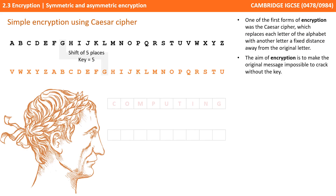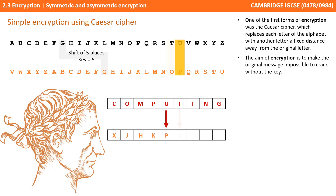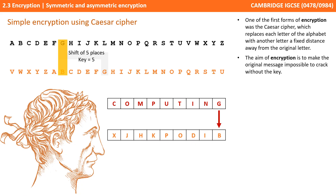One of the first forms of encryption was the Caesar cipher, which replaces each letter of the alphabet with another letter a fixed distance away from the original. To decrypt the message, the recipient needs to know how many places the alphabet has been shifted. This is known as the key. If the recipient knows the key, they can decrypt the message. Of course this sort of encryption is very easy to crack even without the key. The ultimate aim of encryption is to make the original message impossible to crack without knowing the key.